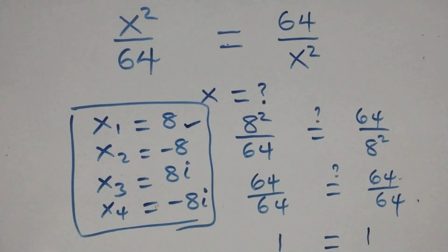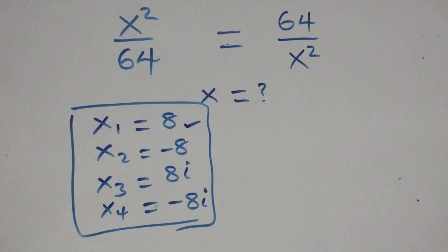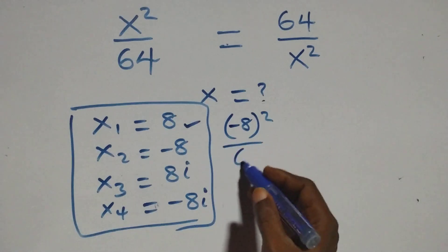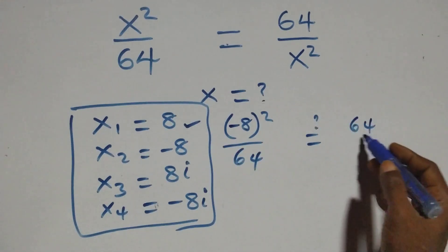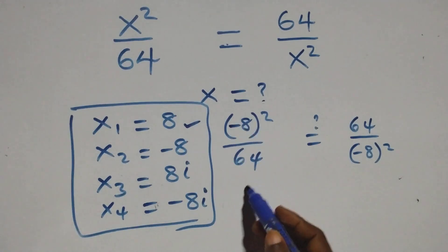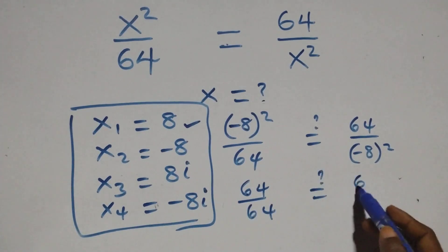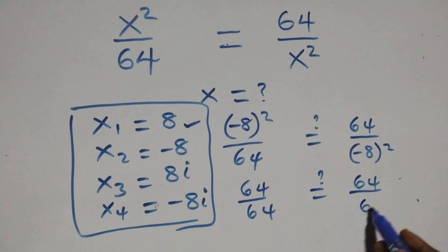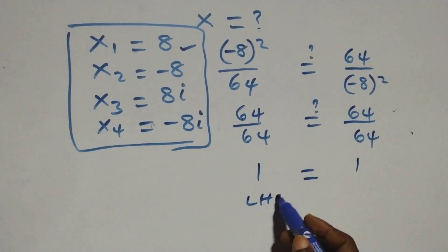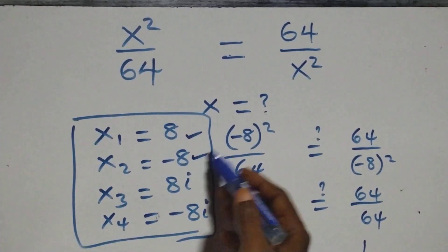Substituting x = −8: the equation becomes (−8)² over 64. Since (−8)² = 64, this is 64 over 64 = 1, and the right-hand side is also 64 over (−8)² = 64 over 64 = 1. Left-hand side equals right-hand side, so x = −8 also satisfies the problem.